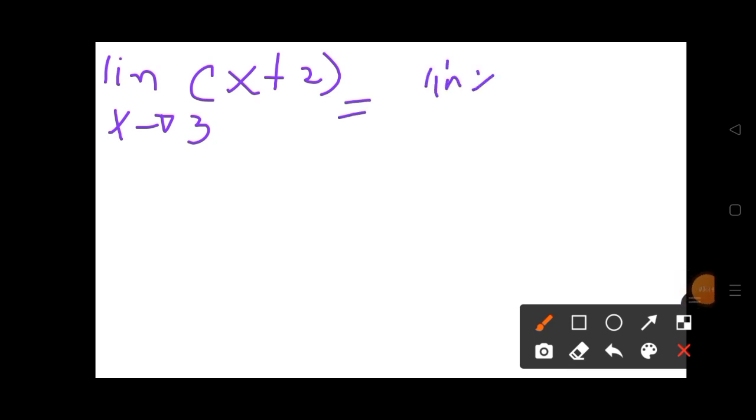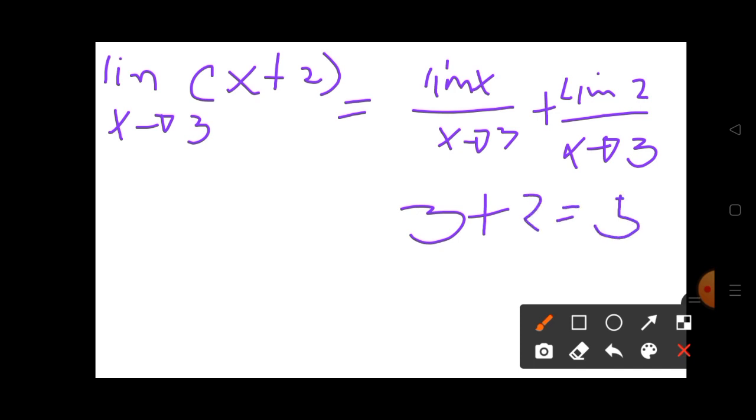We have now limit of x, x approaches to 3, plus limit of x approaches to 3. So we have now 3 plus 2, that will be 5.